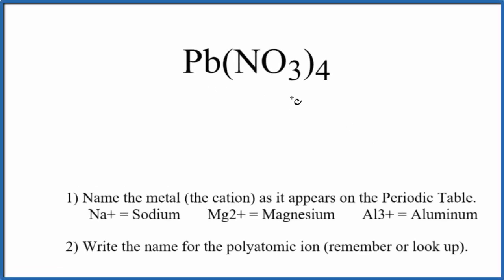To write the name for Pb(NO3)4, we first need to recognize this NO3 here. This is called the nitrate ion. It's a polyatomic ion, a very good one to remember. We have four of them bonded to the lead.